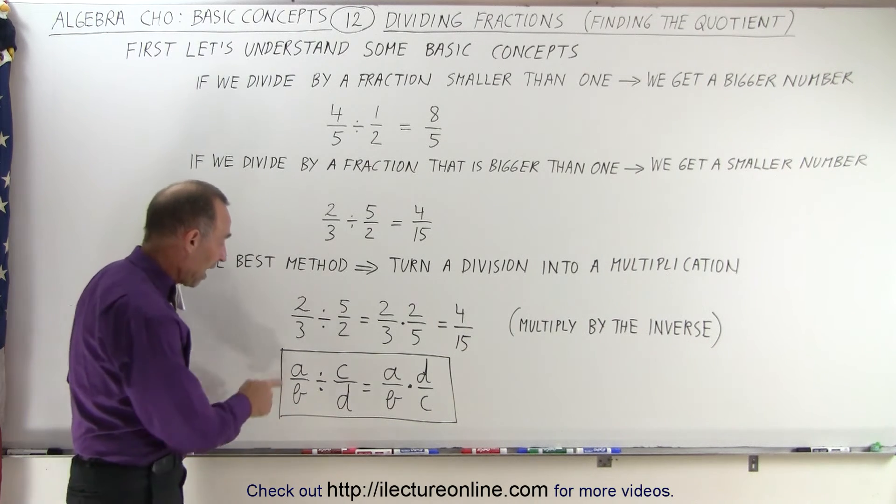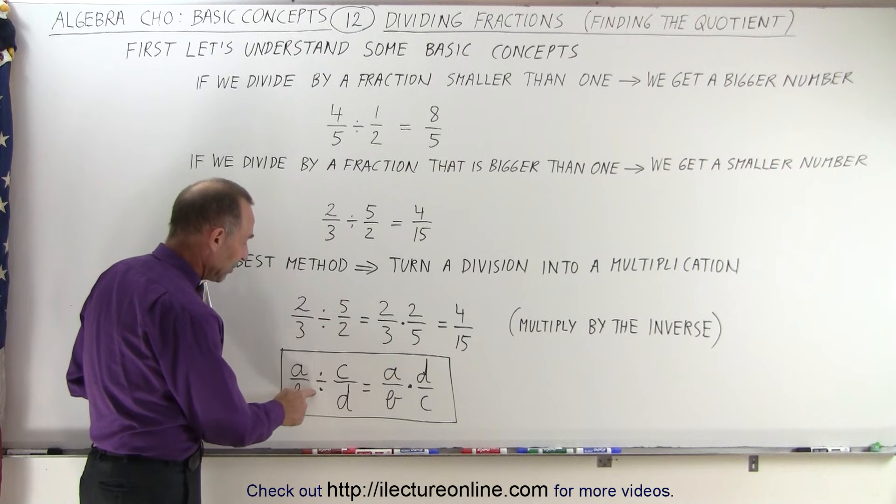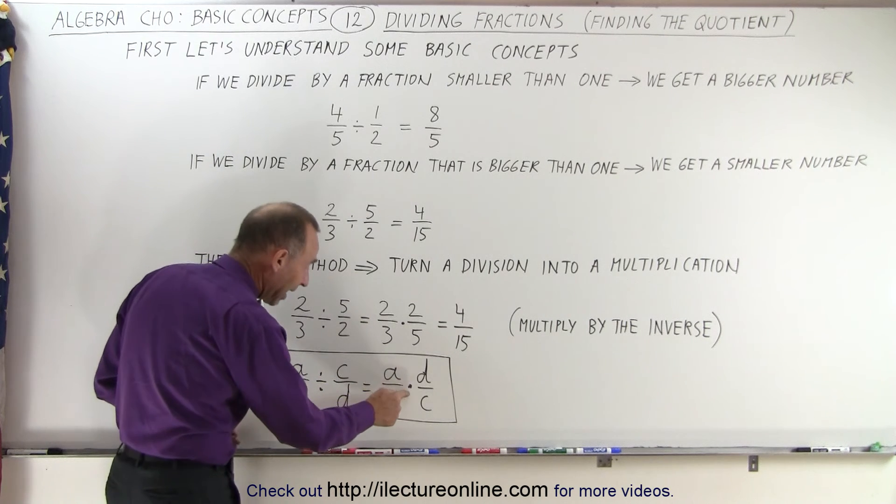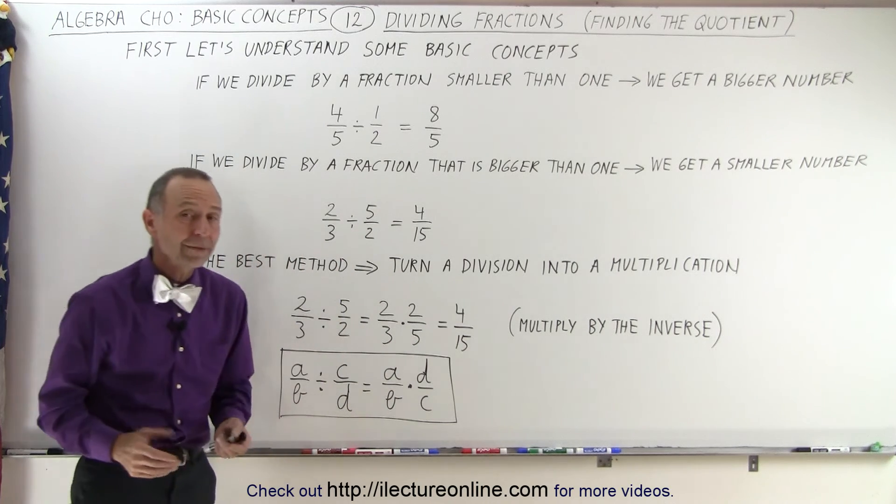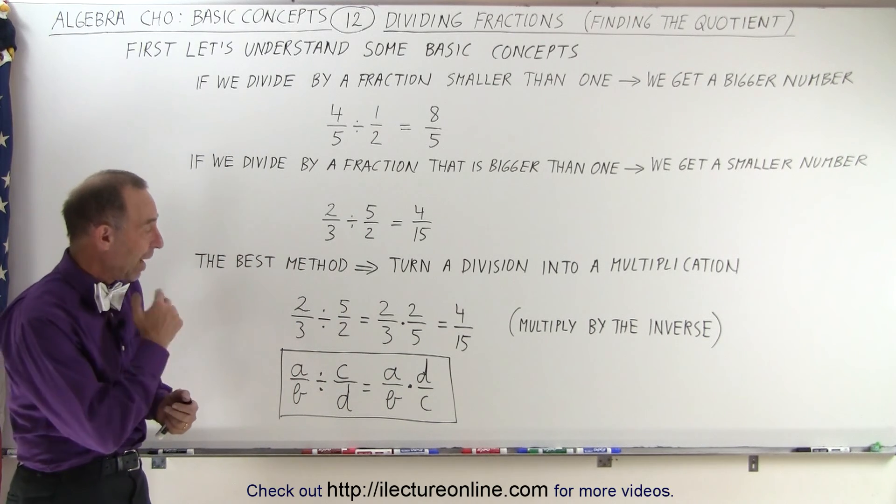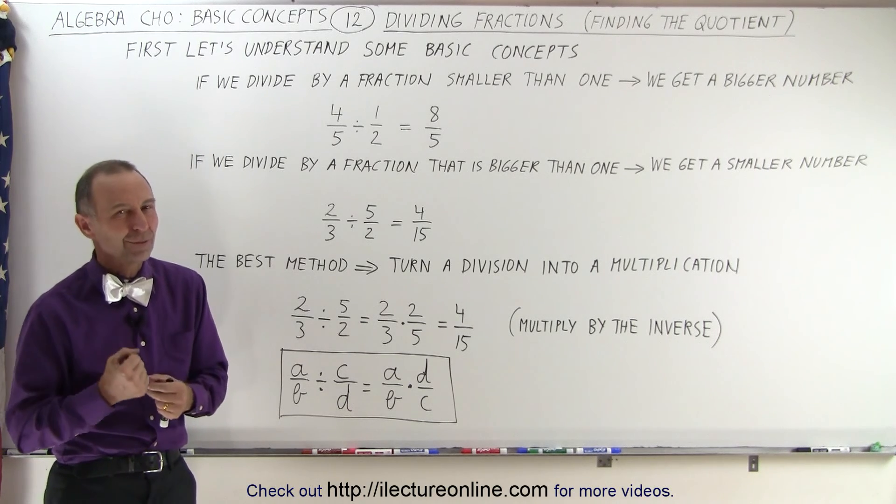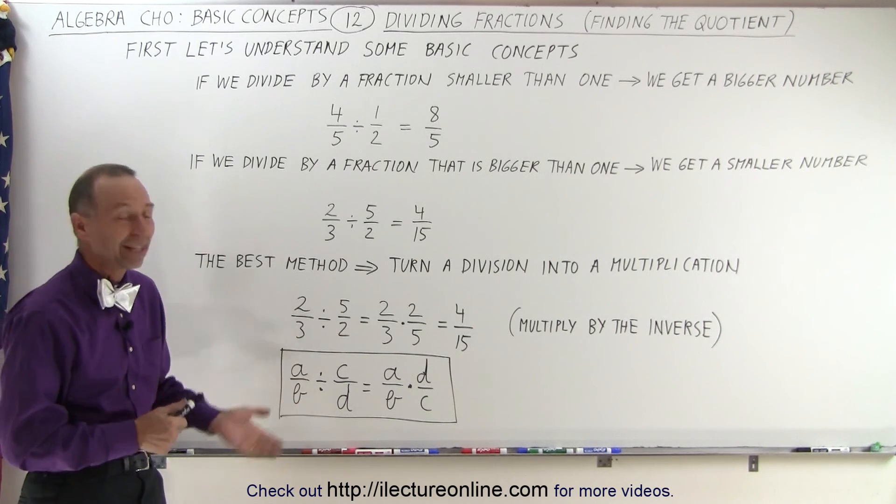And so in general, when we have a divided by b divided by c divided by d, that's the same as a divided by b times d over c, simply turn the fraction around. And that's the general rule of how we actually divide one fraction by another. We cheat, we make it into a multiplication. That's how it's done.